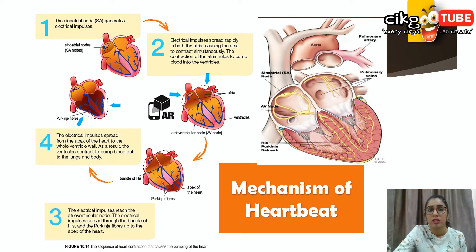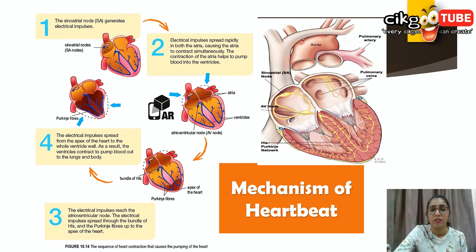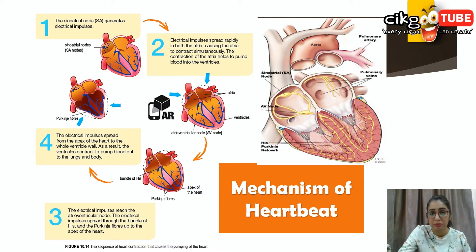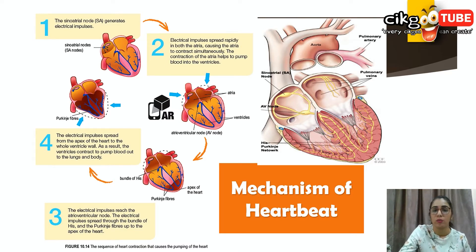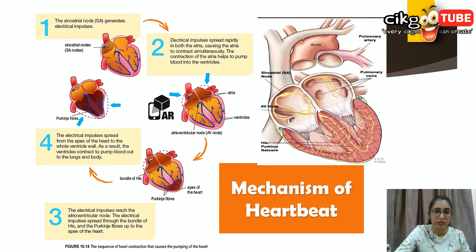The AV node, which also receives impulses from the SA node, delays the impulses for about 0.1 seconds to ensure a complete flow of blood from the atria to the ventricles before conducting impulses into the ventricles through the bundle of His and its two branches in the septum between the ventricles. The impulses that reach the apex of the heart then spread to all parts of the wall of each ventricle through a network of Purkinje fibers, producing a contraction wave in both ventricles.